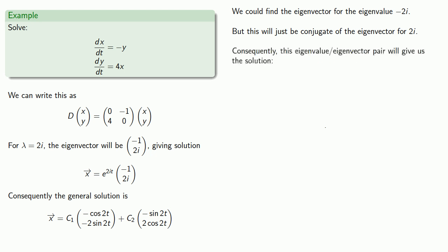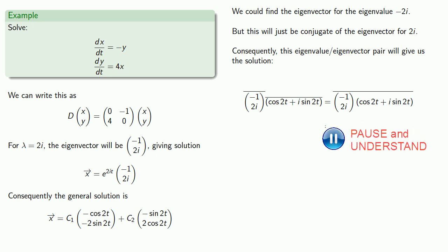And consequently, this eigenvalue-eigenvector pair will give us a solution, the conjugate of the eigenvector times the conjugate of the solution. But that will just be the conjugate of the eigenvector times the solution. And we already determined what that is.